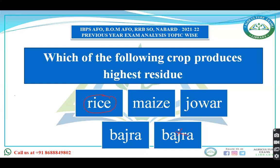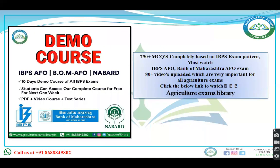Regarding crop residue management, the government has given various financial assistance. The crop residue management scheme was launched in 2018. For individuals buying implements or setting up custom hiring centers (CSC), 50 percent of the cost is provided as financial support. For FPOs, 80 percent of the cost is provided. This allows small and marginal farmers who cannot afford implements to take them on rent from CSC centers.